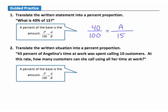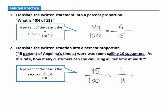Question 2. Translate the written situation into a percent proportion: 45% of Angelina's time at work was spent calling 10 customers. At this rate, how many customers can she call using all her time at work? We know we have 100 here. The percent is 45%. For the base, we're taking 45% of Angelina's time at work — that's the base, and they don't tell us how long she's working, so the base is unknown. The amount is 10, the number of customers she called.